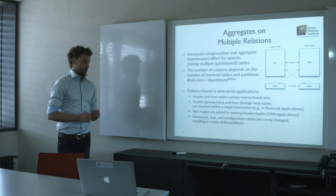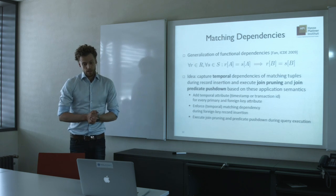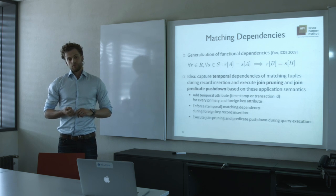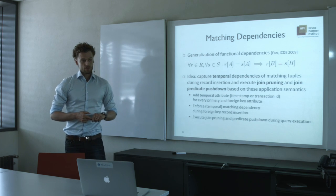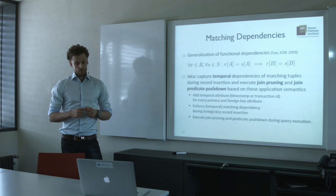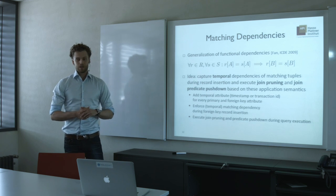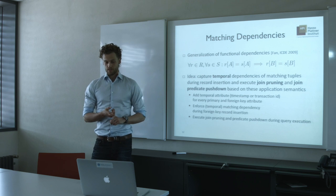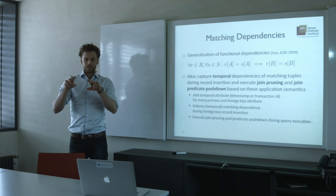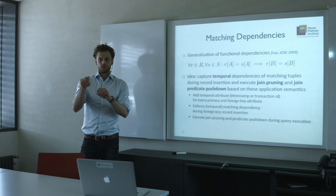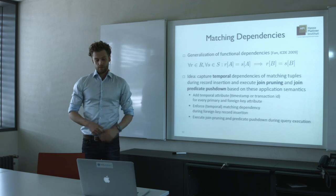And the idea now is to capture a temporal relationship between records inserted in those two transactional tables and use that relationship to do join pruning during runtime. So for every record we add to those tables, we add an additional temporal attribute which can be a timestamp or transaction ID for every primary and foreign key attribute. And when we insert a matching tuple for that record, we do a lookup of the primary key temporal value and set it accordingly, and then we can execute join pruning.